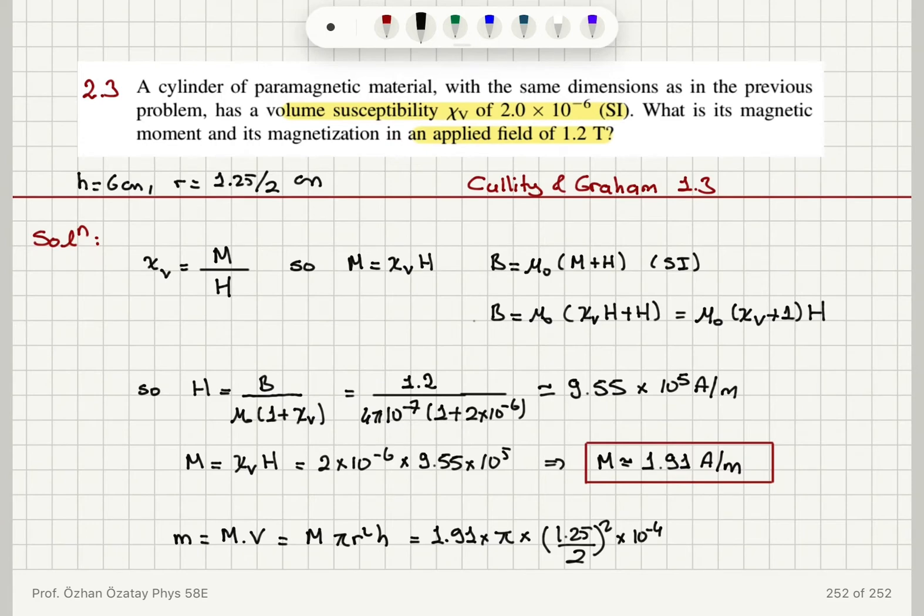And since we're using SI units we need to convert the centimeters to meters, so it's 10⁻⁴ meter squared times 6 centimeters which is 6×10⁻² meters. And this gives us a total magnetic moment of 1.4×10⁻⁵ ampere meter squared. Since we worked in SI units, this will be the total magnetic moment of this paramagnetic cylinder.